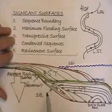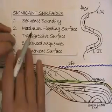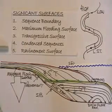And the ravinement surface, which represents an eroded surface, sometimes associated with transient barrier islands.